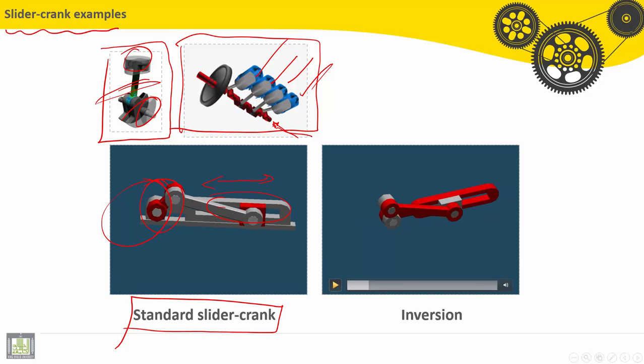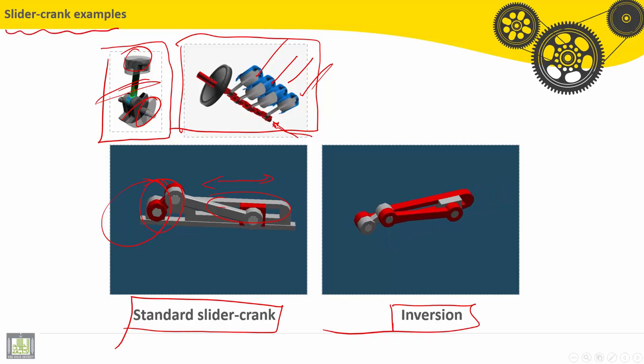On this video, we have something called inversion. So, next chapter, we will see that with details, but we can see here for this inversion, the slider is fixed to the ground. We have a translation here for the cylinder, and the output will be the alternative motion for the connecting rod.